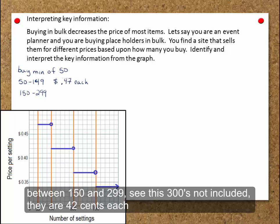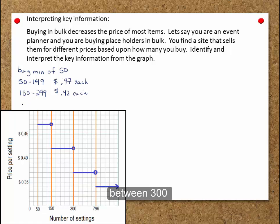Between 150 and 299. See, this 300 is not included. They are 42 cents each. Between 300 and 795, here, they are 37 cents each.